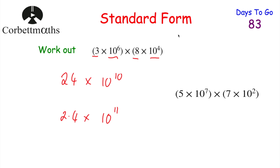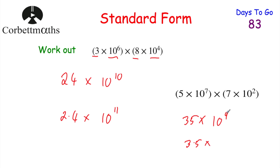Try this: 5 × 10⁷ × 7 × 10². First, 5 × 7 = 35. Then 10⁷ × 10² = 10⁹. So 35 × 10⁹. Since 35 isn't between 1 and 10, divide by 10 to get 3.5, and add 1 to the power: 3.5 × 10¹⁰.